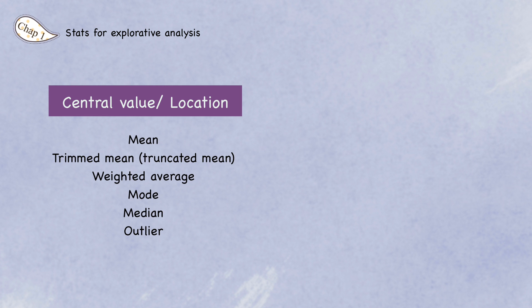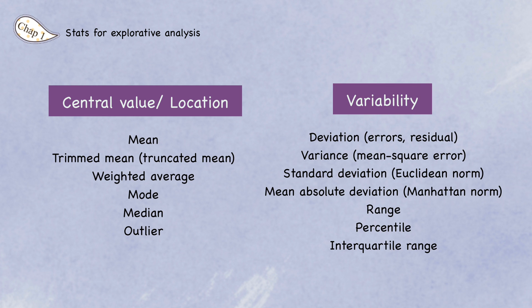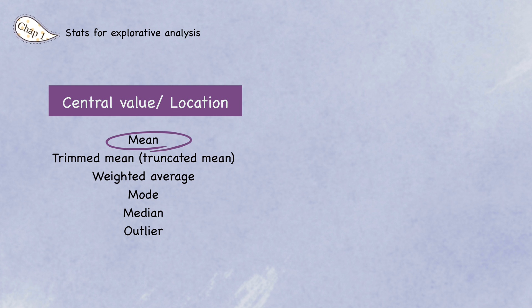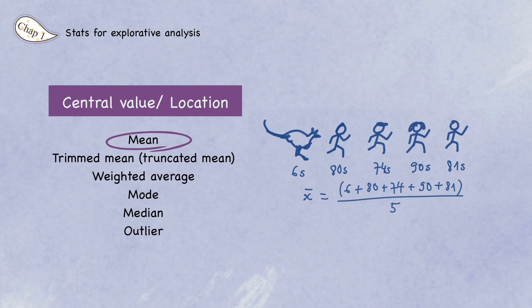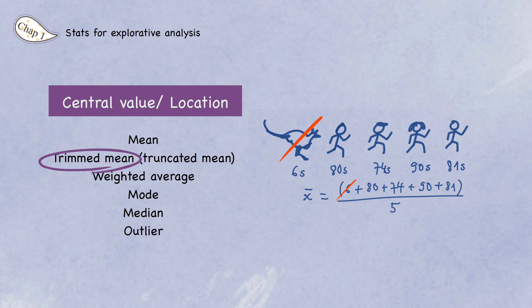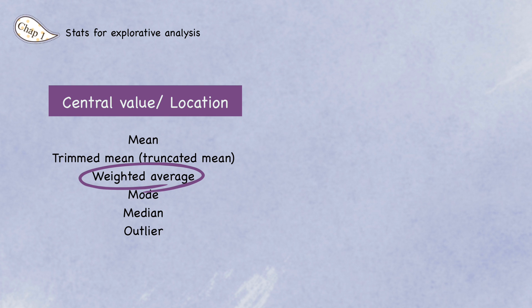The most basic topic in statistics is probably the estimates of central value and variability of the data — your bread and butter when doing descriptive analysis on a dataset. The most basic estimate for central value is the mean, or average value. A variation is the trimmed mean, which is the average of all values after dropping a fixed number of extreme values. Another variant is the weighted mean, which is the sum of all values times their weight divided by the sum of the weights.